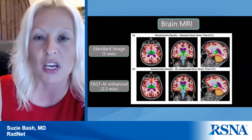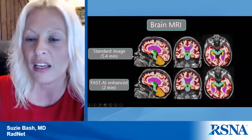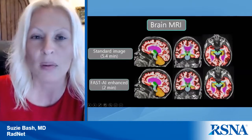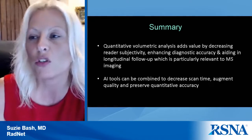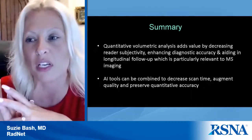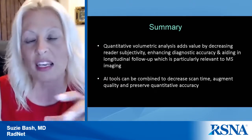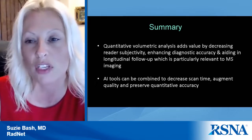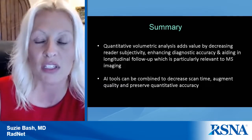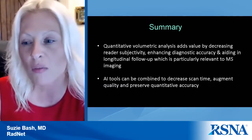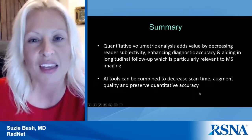For example, if the hippocampal volumes were two milliliters before, they'll be two milliliters after — we're not losing any information. In summary, quantitative volumetric analysis adds value by decreasing reader subjectivity and enhancing diagnostic accuracy, and really aids in longitudinal follow-up. Referrers really love these tools; once they start using them I've never had a referrer go back. It is particularly relevant to MS imaging, and AI tools can be combined to decrease scan time and augment quality while preserving quantitative accuracy.